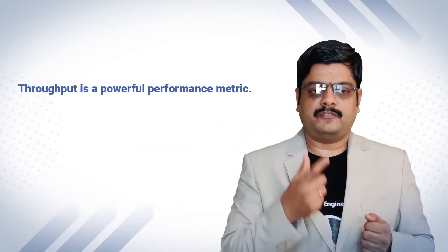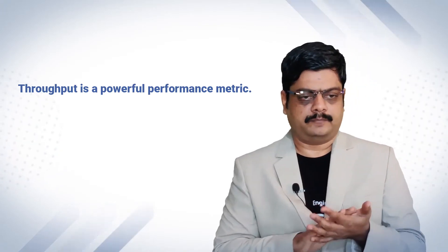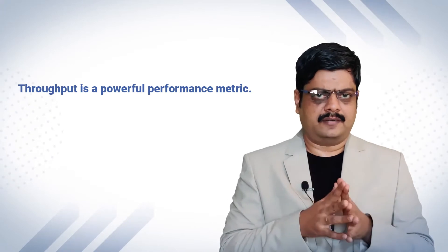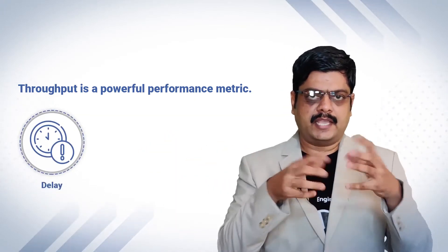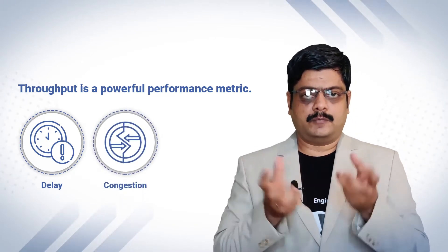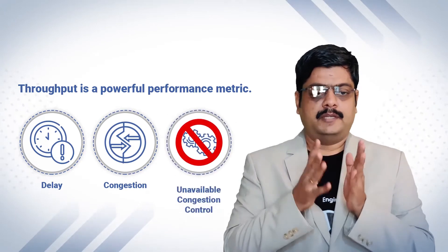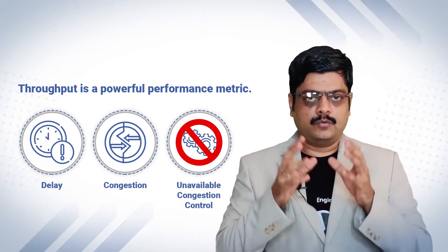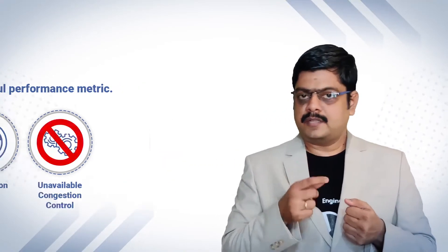Throughput is a powerful performance metric for wired or wireless networks. Throughput gets affected mainly due to delay in the network — if the delay is high, the throughput will also be affected. Then, network congestion — a huge amount of packets going into the network and non-availability of congestion control will automatically affect the throughput. Throughput is the ultimate and basic metric to measure the performance of any network.